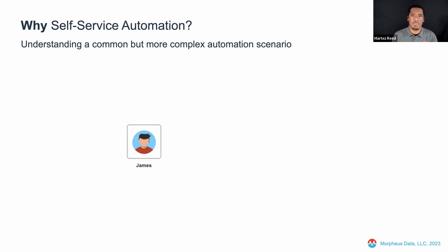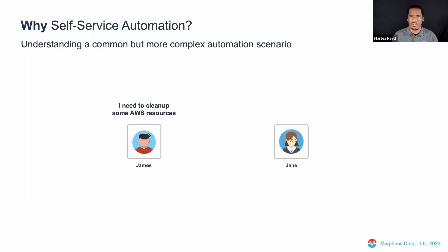In this particular example, we have James. James is a senior DevOps engineer and he needs to clean up some AWS resources. James was talking to Jane earlier and knows that Jane had written a script a couple of weeks ago to perform that process — cleaning up some AWS resources from a given region in their AWS account. So James figures: I need to clean up some AWS resources, Jane's got a script, I can just run the script and clean it up.